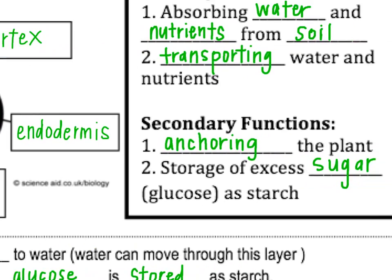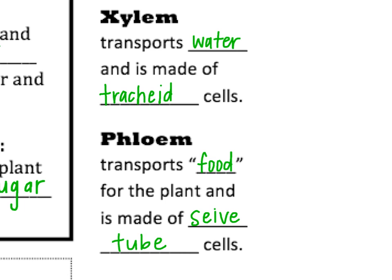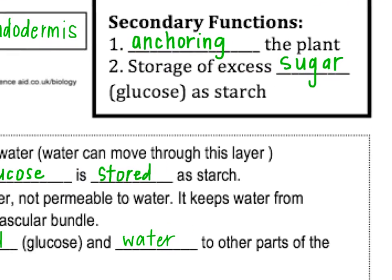Xylem is the name of the vein that transports water, and it's made up of a special kind of cells called trachea cells — kind of like your trachea, which means tube — so it's only for moving water through the plant. Phloem is the special kind of tube that transports food for the plant, things like glucose and other nutrients. The phloem is made of special cells called sieve tube cells. These are the two types of transport systems that make up the vascular bundle.